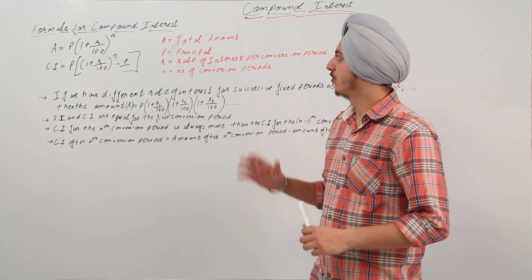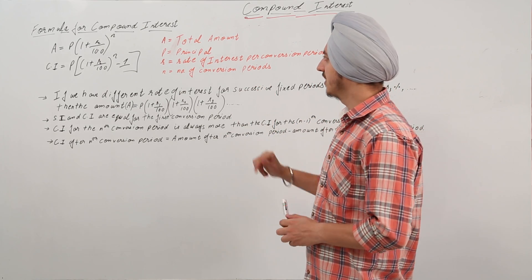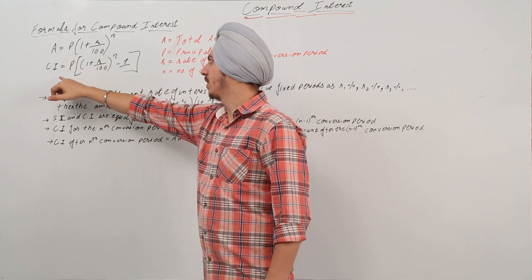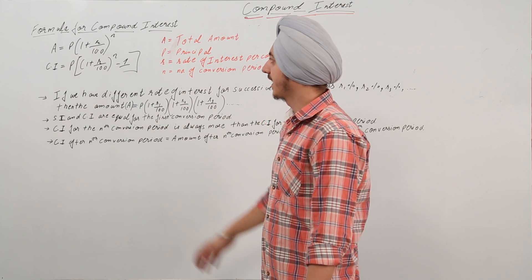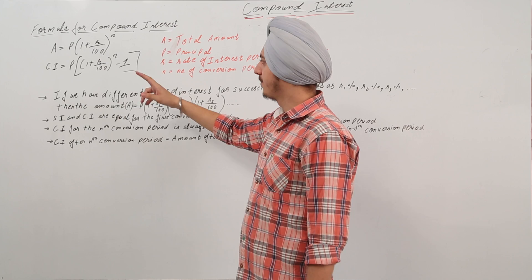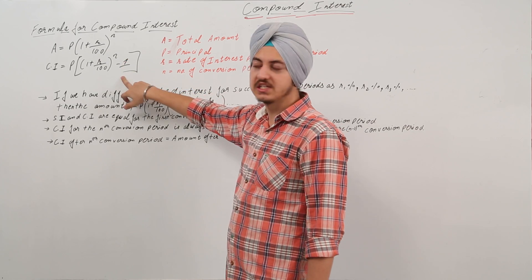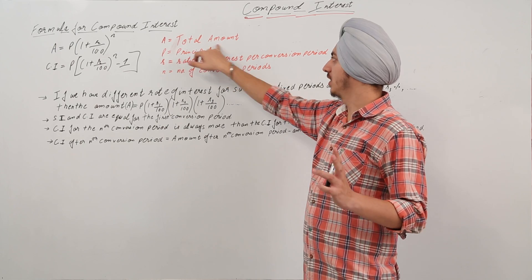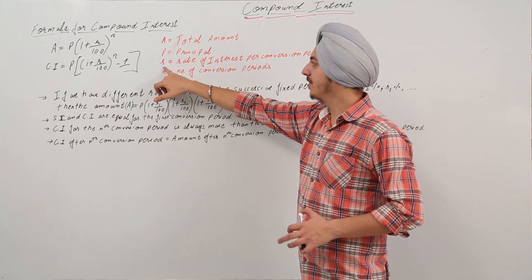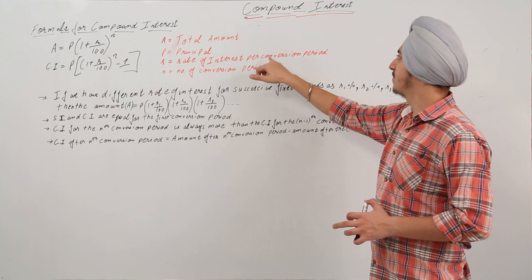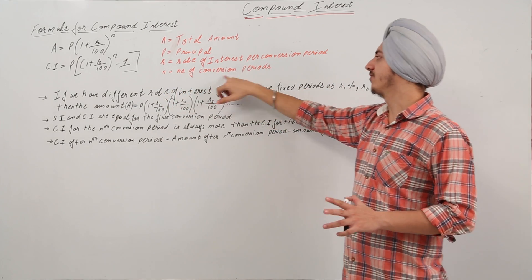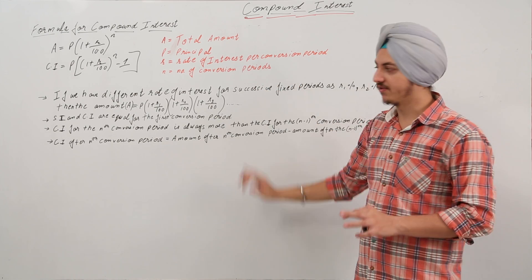We will again revise the formula for compound interest. The amount is equal to P into 1 plus R by 100 raised to power N, and compound interest is equal to P times bracket 1 plus R upon 100 raised to power N minus 1. Here, A is the total amount, P is the principal, R is the rate of interest per conversion period, and N is the total number of conversion periods.